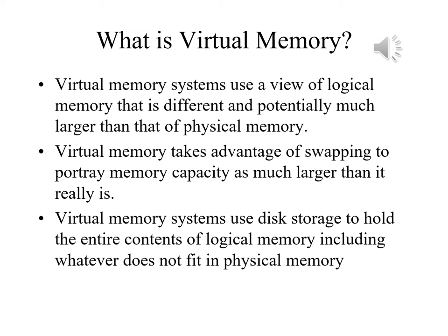We spoke earlier about swapping — moving the core images of programs in and out of disk storage when we switched active processes. Virtual memory usually assumes that there is more than one process resident in logical memory, that parts of these processes are resident in physical memory, and that we can use part of our disk storage as an extension of physical memory. We do this because disk storage has always been less expensive than main memory, and this allows us to extend our memory capacity by a large extent.